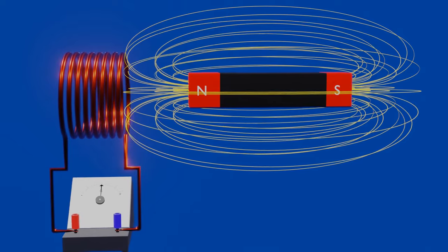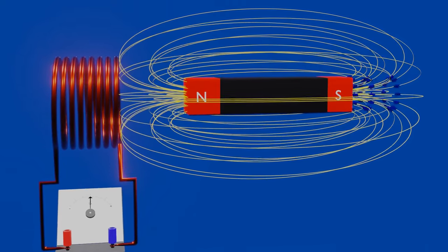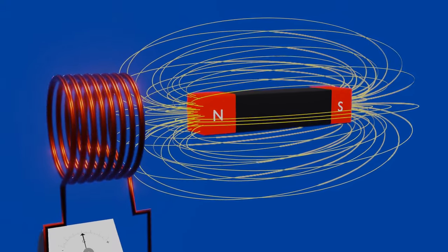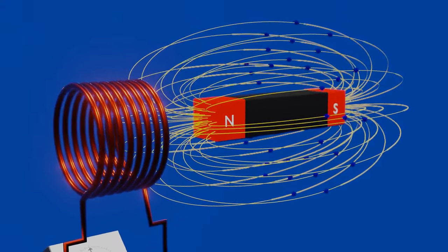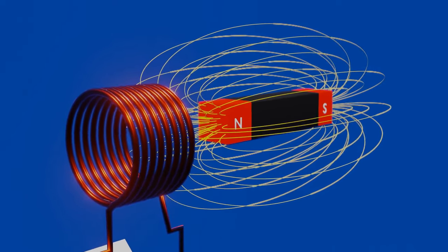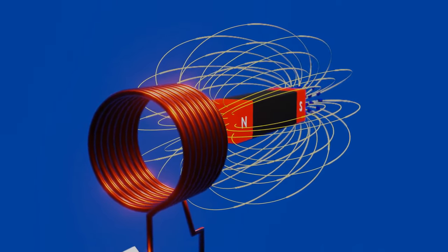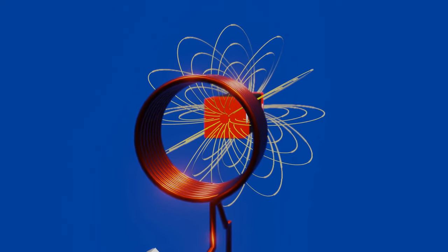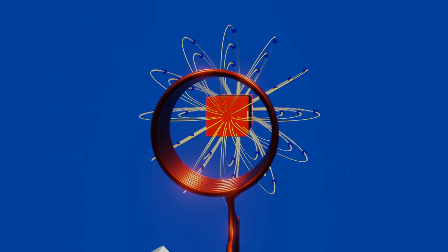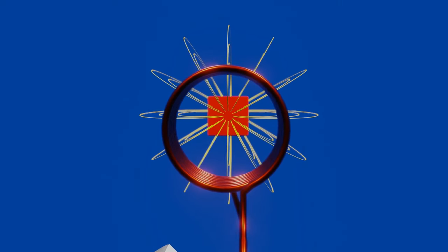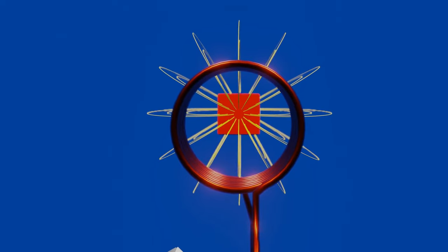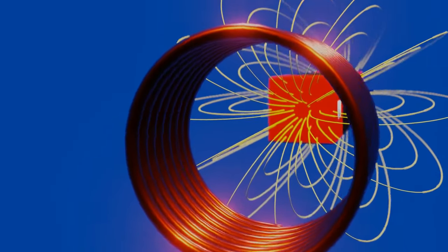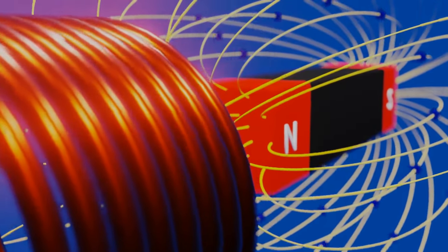In this video we have talked about how current induces in a conductor and what decides the magnitude of EMF induced in the conductor. But what about the direction of that induced current? In the next video we will talk about how Lenz's law helps us find the direction of induced current in the conductor. Thanks for watching — if this video helped you, please like, subscribe to our channel, and press the bell icon to be notified whenever we upload a new video.